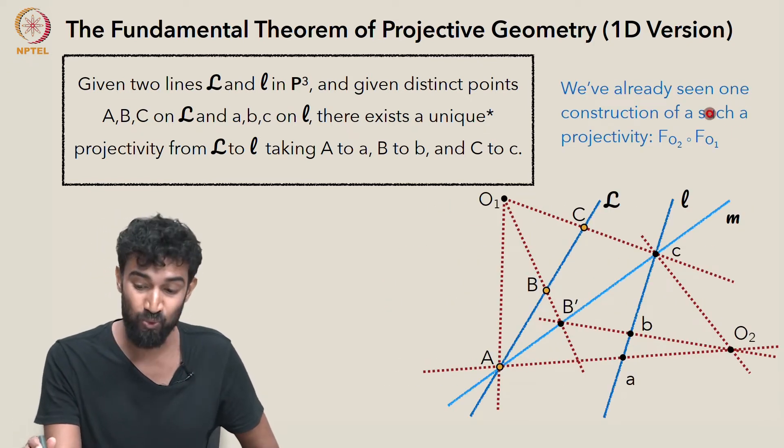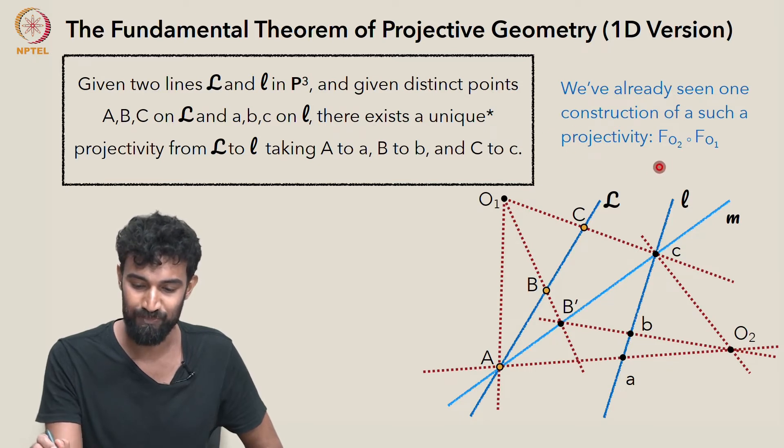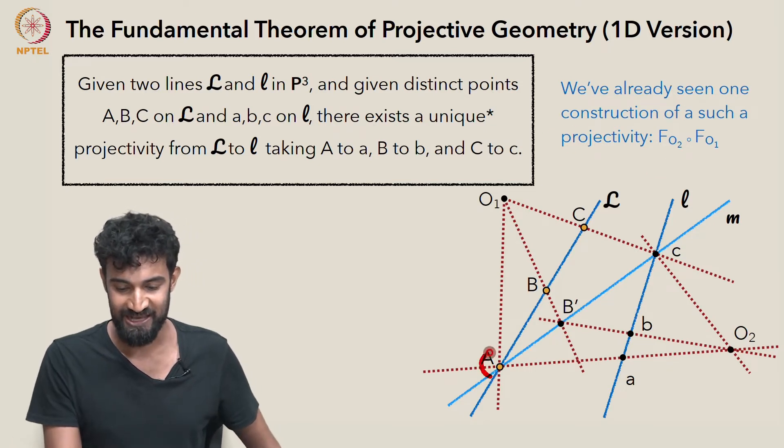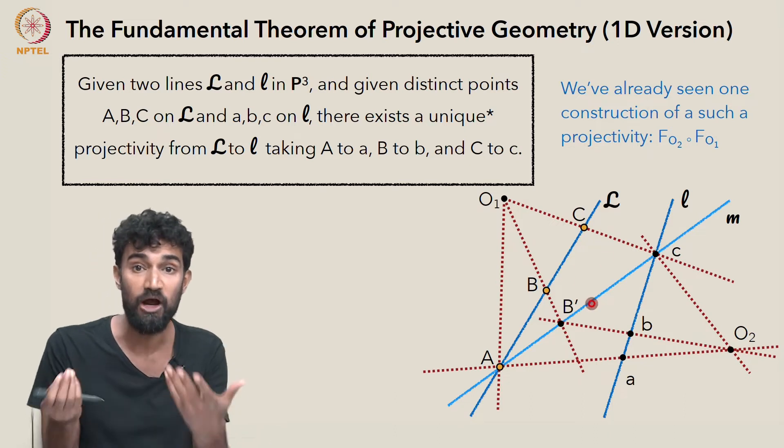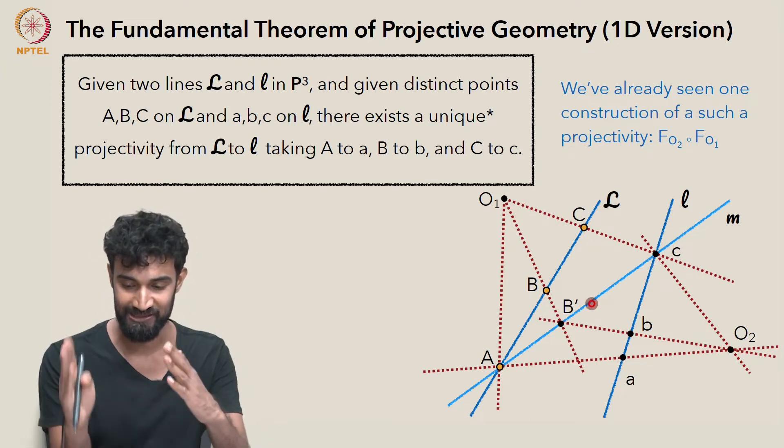We've already seen one construction of a projectivity that takes capital A, capital B, and capital C to little a, little b, and little c, where these points were chosen arbitrarily in capital L and little l.